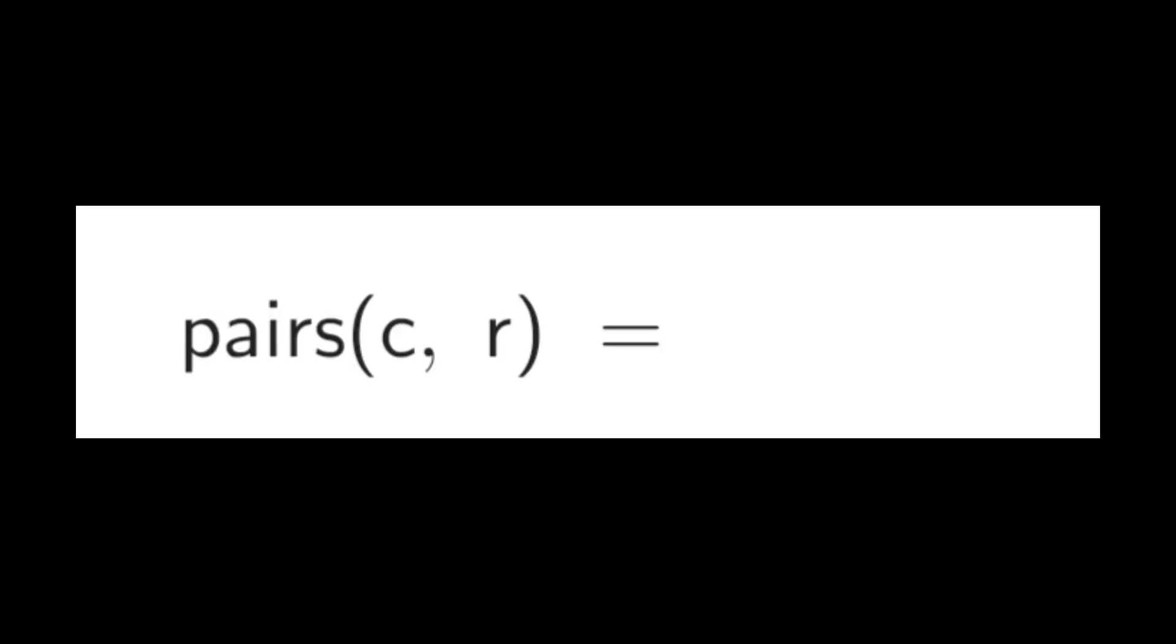By the way, the formula for the total amount of possible pairs is the amount of rows times the amount of columns squared minus the amount of columns, divided by 2.